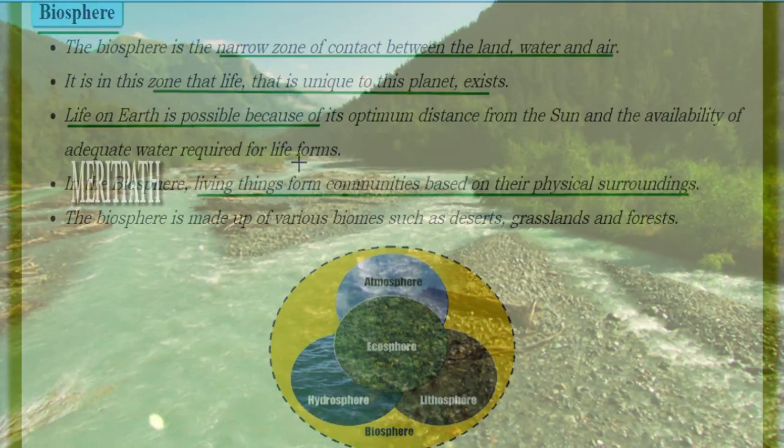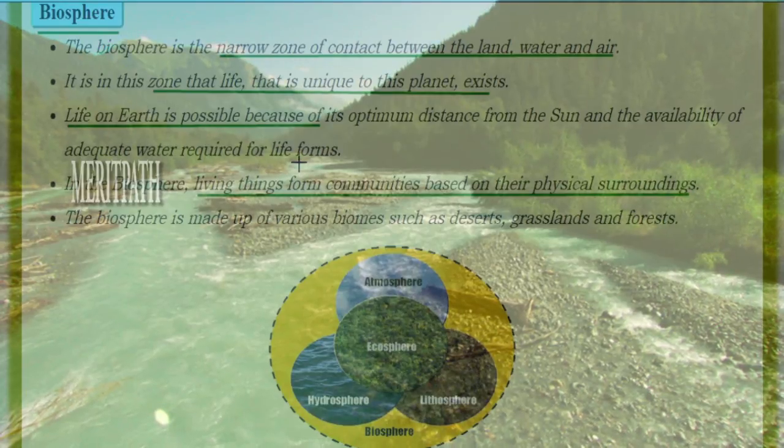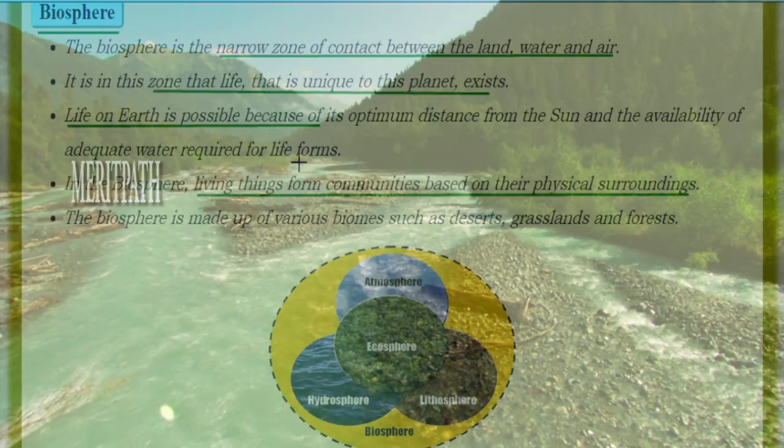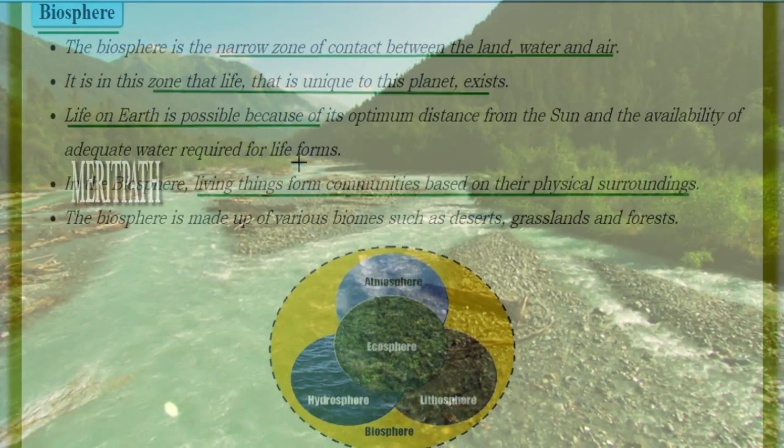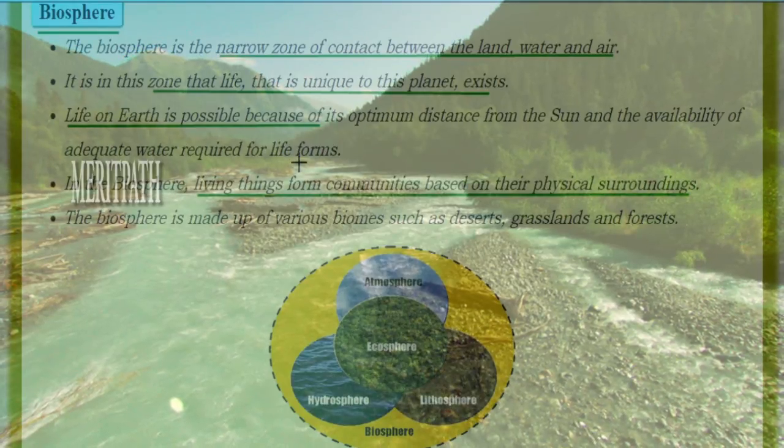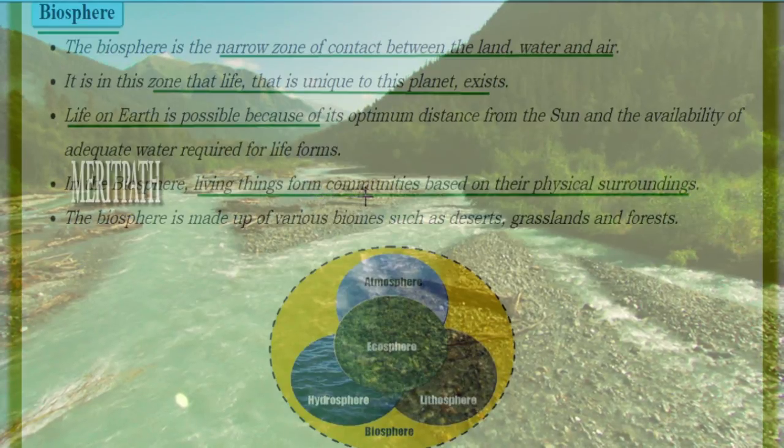Survival and reproduction of organisms is a continuous process. Life is possible because Earth is at an appropriate distance from the Sun and has a good amount of water available.